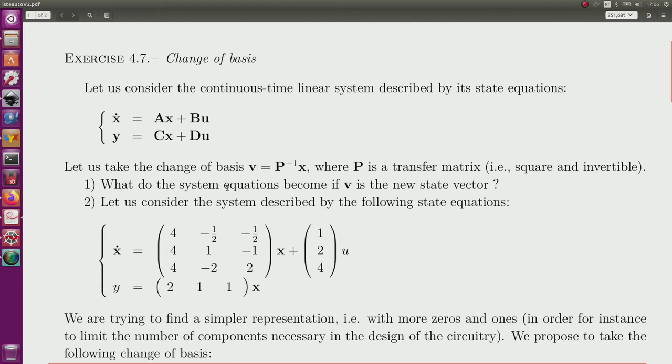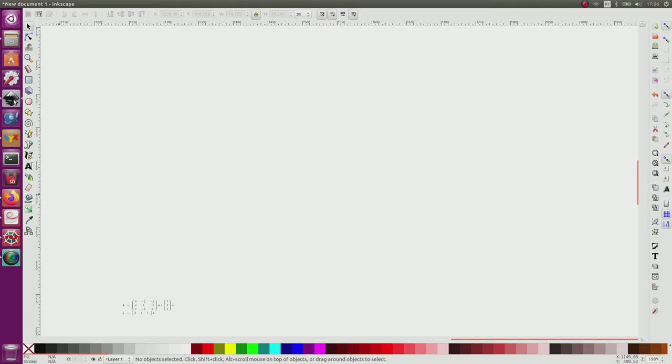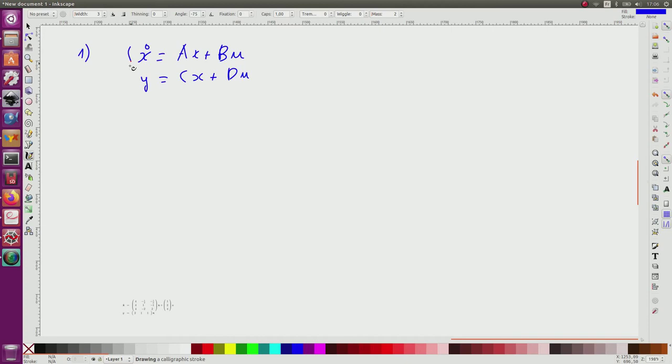So to compute the new formulation with V, we'll perform as follows. So question number one. Since I have x dot equal Ax plus Bu and y equal to Cx plus Du, I have the change of variable x equal to PV, or equivalently V equal P inverse x, which is possible since P is square and invertible. As a consequence, x dot is equal to PV dot.